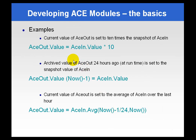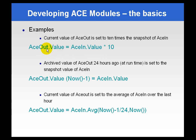When developing your code, keep in mind some very basic syntax rules. For example, when declaring a variable and you want to get its value, you would use .value. When you want the tag name, you would use something .tag, and so forth. In the first example, the ACE out tag at runtime — its value would equal the ACE in tag's value times 10. That's a very simple example.